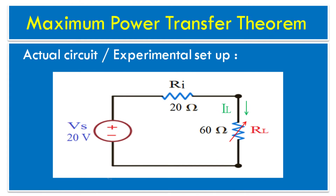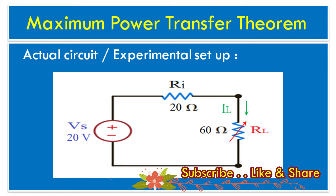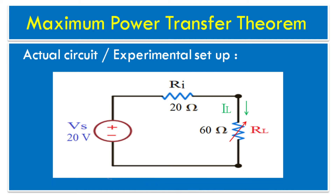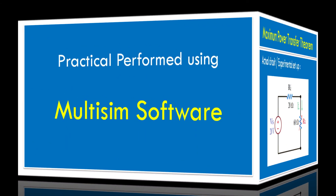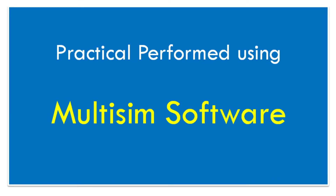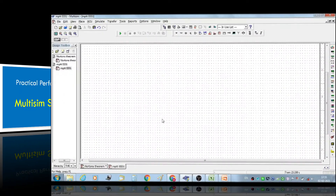Let's understand the actual circuit used in the experimental setup for Maximum Power Transfer Theorem. We have selected two resistors: resistor Ri and resistor RL, where RL is a variable resistor, and one DC voltage source VS with VS equal to 20 volts, Ri equal to 20 ohms, and RL as the variable resistor.